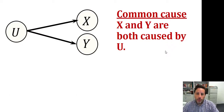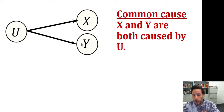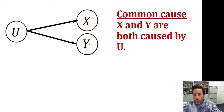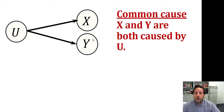An important concept is the concept of common cause. Let's say we find an association between x and y. It could be that x causes y, or y causes x, or the case represented in this causal model where there is no causal relationship between x and y. Instead, another variable or composite of variables, u, is a common cause — u causes both x and y, and that is why these two variables are associated.